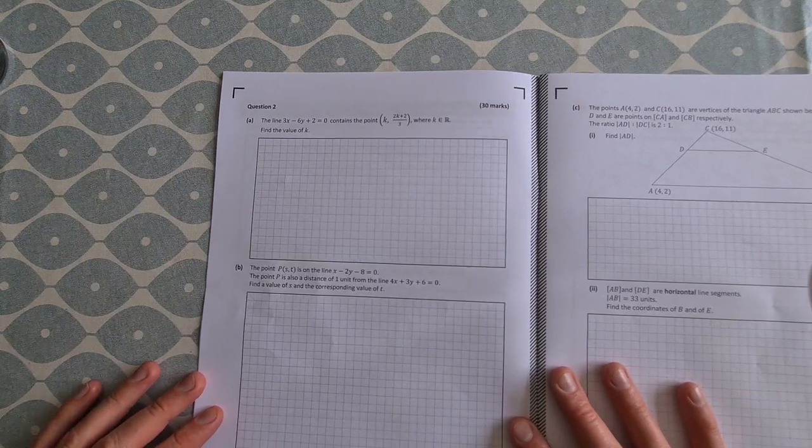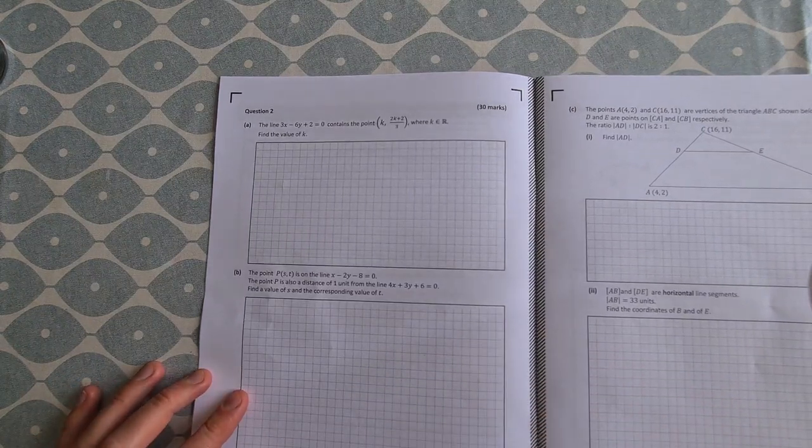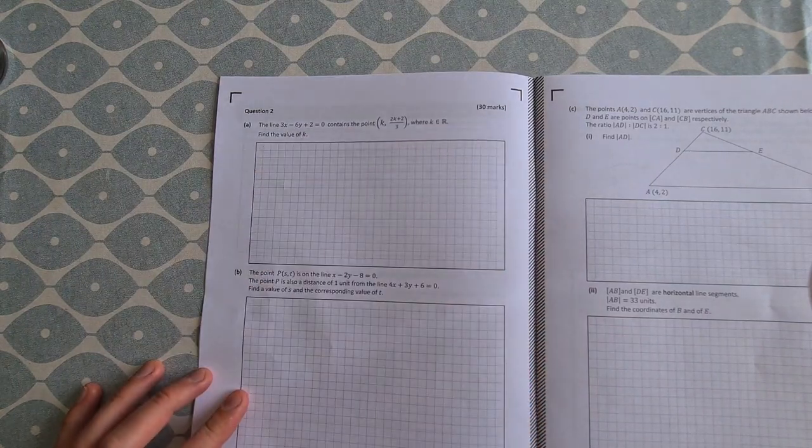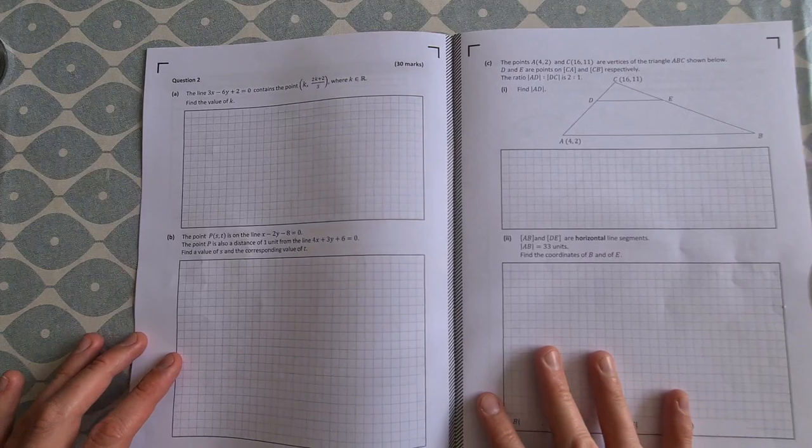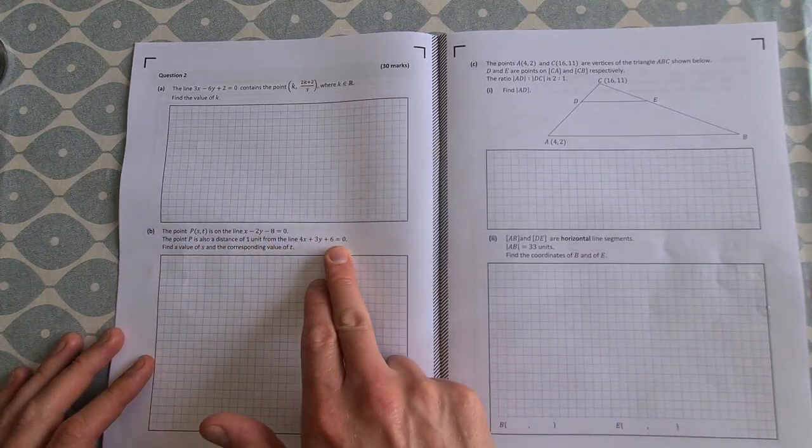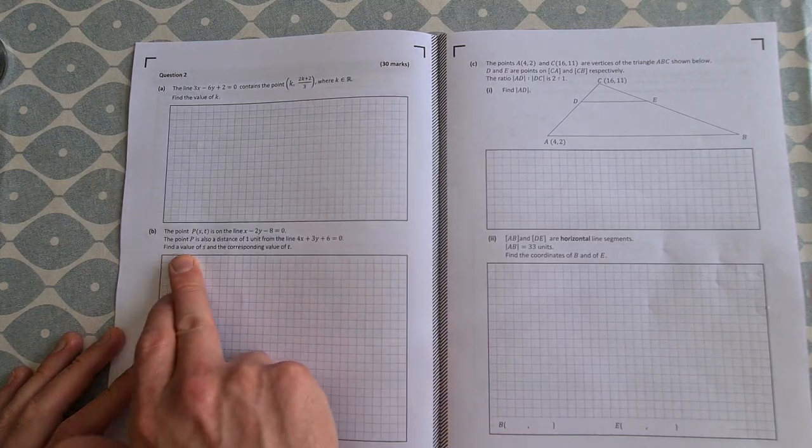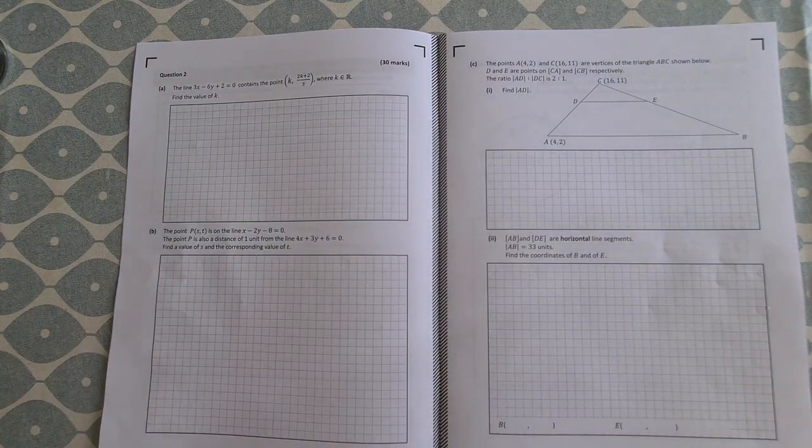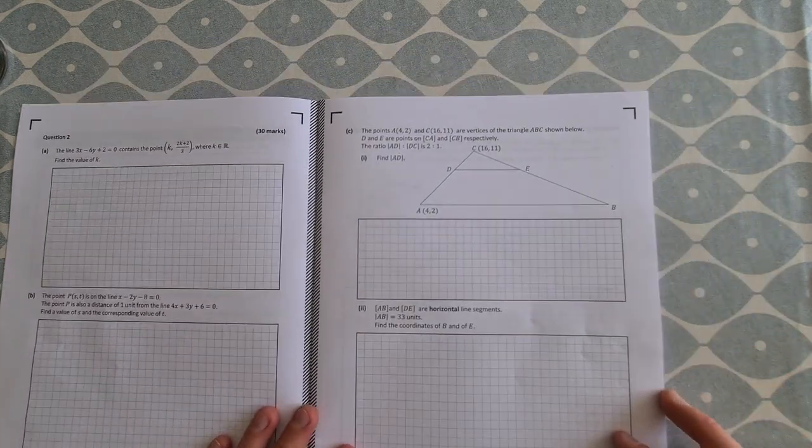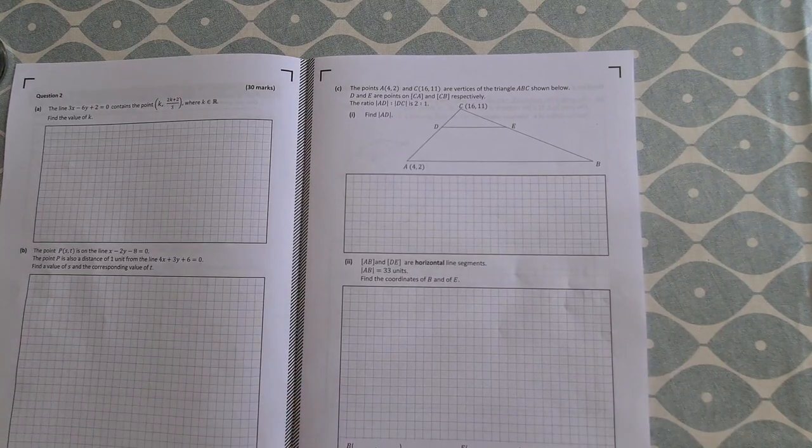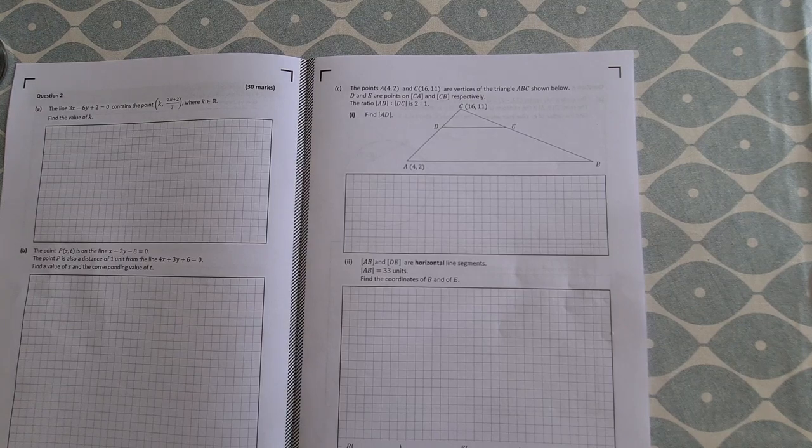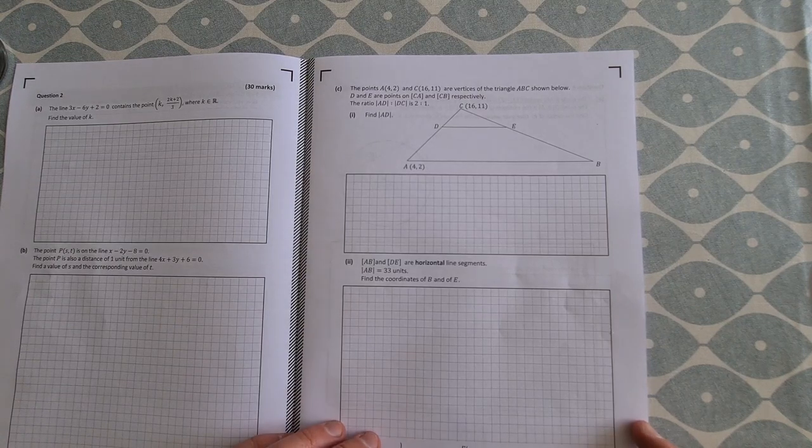On to Question 2 then, a bit of coordinate geometry of the line. So not too bad there. Given your points, find k, just a bit of algebra there for you. The next question, the point is on the line, the point is a distance one unit from this line. Find the value of s and the corresponding value of t. So using a couple of different formulas there and you'll be able to get that. We've got a bit of a triangle here, so maybe you're going to use some ratios or something there. A bit more towards your geometry perhaps.